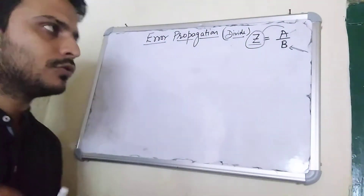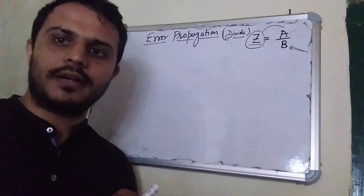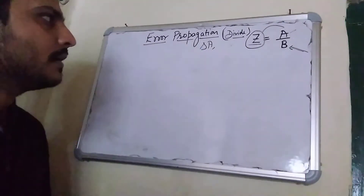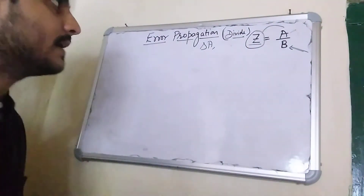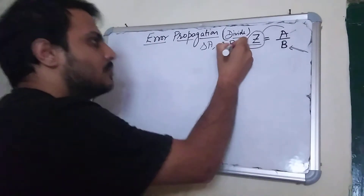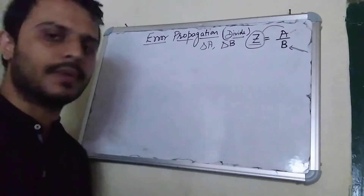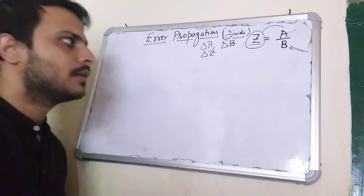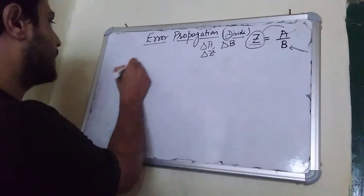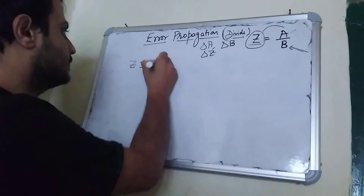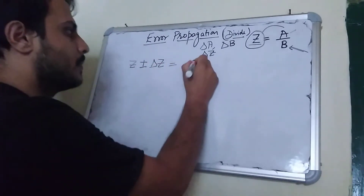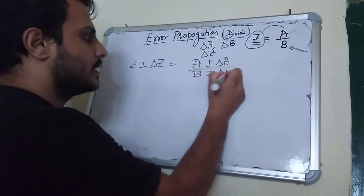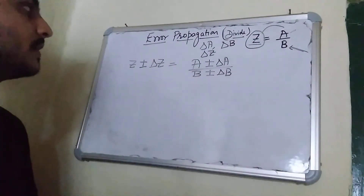Let us consider that I measure the quantity capital A, and delta A is the maximum absolute error in the measurement of A. And let delta B be the absolute error in the measurement of quantity capital B. So definitely there will be an absolute error in Z as well. We write the expression: Z ± δZ = (A ± δA) / (B ± δB).